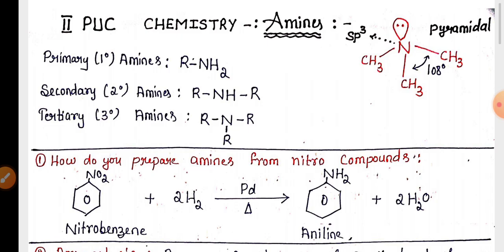You can see the difference between primary, secondary and tertiary amines. One of the most important reactions is to prepare amines from nitro compounds. Nitro compounds like nitrobenzene on reduction with palladium give aniline.